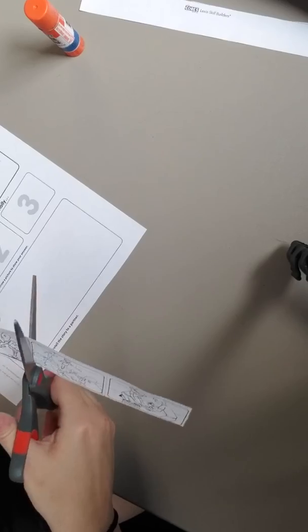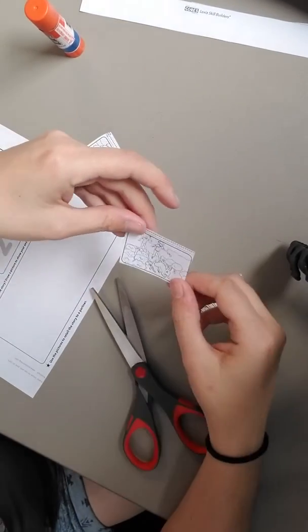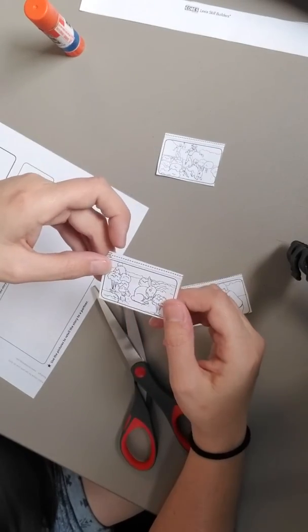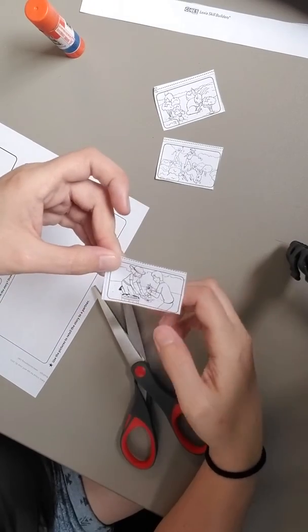So then now we're going to cut the pictures into each one. So let's see. Mom and dad are chasing the bunny. Here's the bunny eating his carrots. And here are mom and dad planting their vegetables.